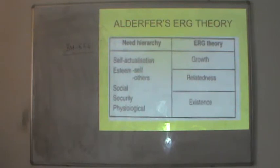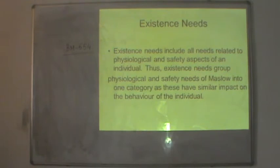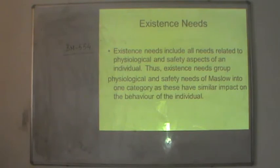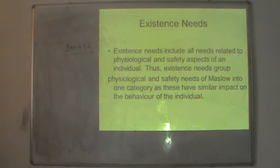The first is existence needs. They include all needs related to physiological and safety aspects of an individual. Existence needs group Maslow's physiological and safety needs into one category, as these have a similar impact on the behaviour of an individual. So the two sets of needs clubbed here are the physiological and safety needs of Maslow.